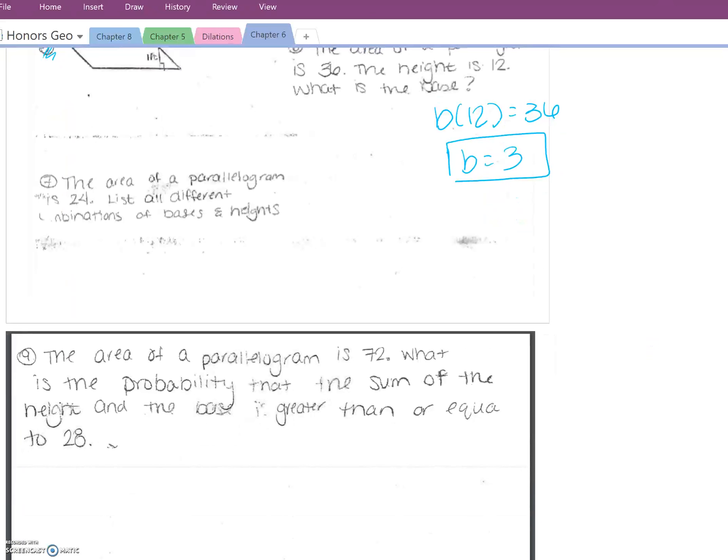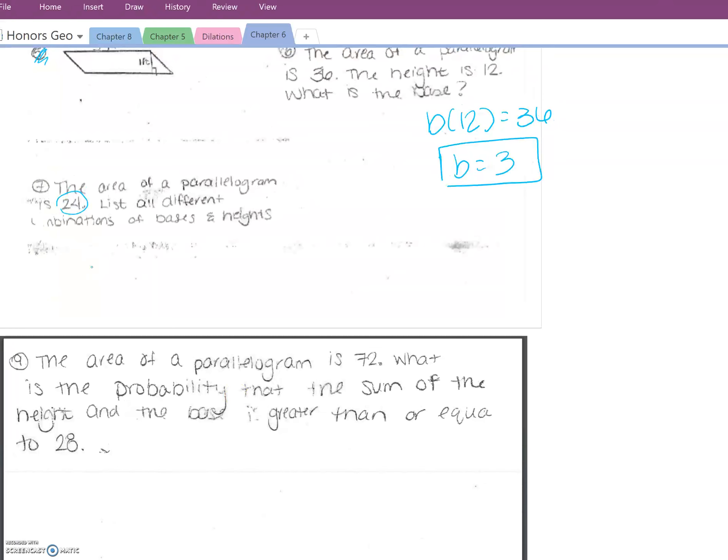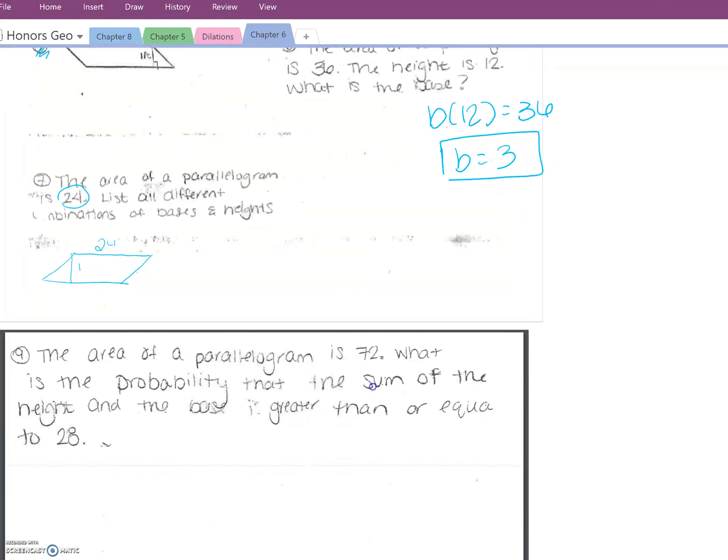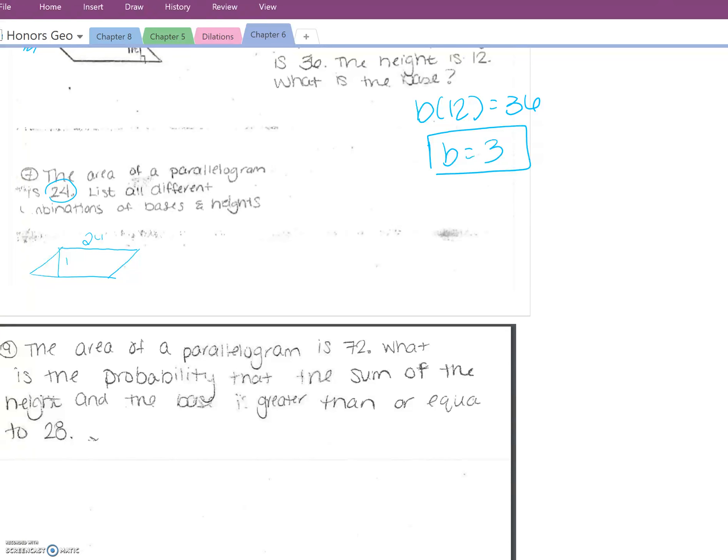Number 7 says the area of a parallelogram is 24, list all the different combinations of bases and heights. I need you guys to understand that a parallelogram where the length is 24 and the height is 1 is different from a parallelogram where the length is 1 but the height is 24. So yes, you must list all possible combinations.